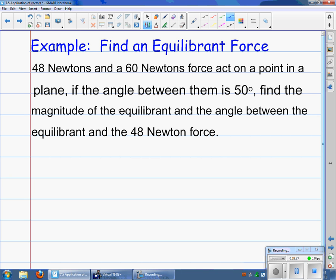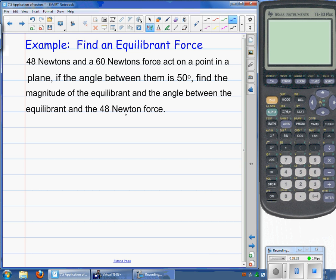find the magnitude and the equilibrium of the angle between them. So what we're going to do is set up a sketch of the situation. We have two vectors acting on a point in a plane. We'll call this our 48-newton vector. We don't have any direction angles at this point, so we just draw them in an arbitrary direction to start with.